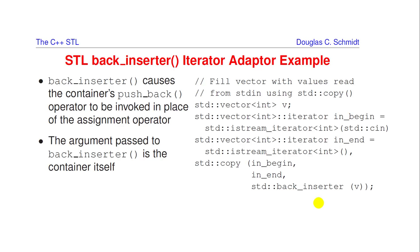Internally, back_inserter creates a back_insert_iterator object, but it's wrapped in a function for type deduction purposes. The IOstreams layer handles converting the raw input to the appropriate type — in this case integers. If you feed it input that can't be converted to int, that's the input stream's problem, not the adapter's. There's less code for you to write.